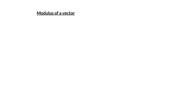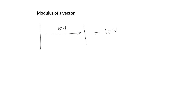Now we discuss modulus of a vector, which means the magnitude of a vector. For example, if you have a vector of magnitude 10 Newton acting towards right, its modulus or magnitude is simply 10 Newton.